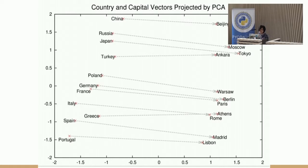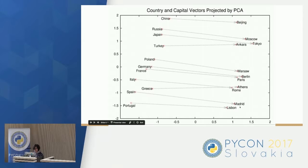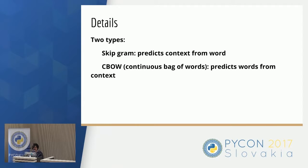There's also an example with country and capital vectors, which you can see here — all the country vectors clustered on one side and the capital vectors clustered on the other side. This provides a nice intuitive way of understanding Word2Vec. There are actually two flavors of implementation: skipgram, which predicts the context from the word, and continuous bag of words, which predicts words from context. Both build word vectors from their respective approach. There are some papers written about this, and I have links at the end of this presentation.